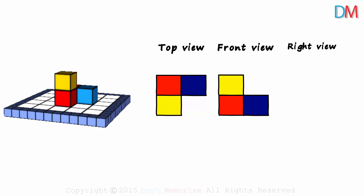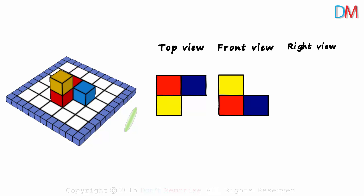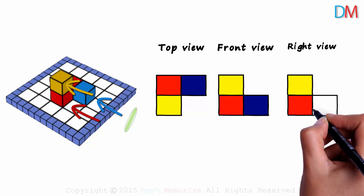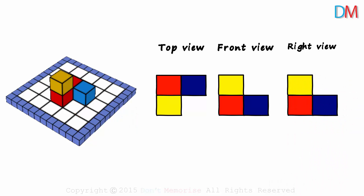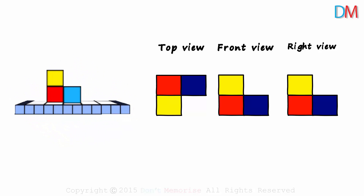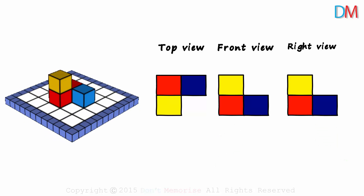Let's rotate the figure to verify our answer. Yes, we are right. And what about the view from the right? In the same way, when we view the figure from the right, we will get a red, yellow, and blue face like this. Notice that the front view and the right view look the same. Drawing views from different angles simply requires a little bit of imagination. And with enough practice, you will surely excel at it.